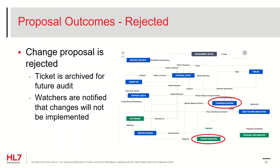There also may be negative consensus — an agreement that the proposal should be rejected. This happens when voting requirements are met and less than 30 percent of the votes cast are affirmative. In this case, the ticket transitions to the Change Rejected state and is archived and retained for future audits and reference. Watchers are notified that the changes will not be implemented.